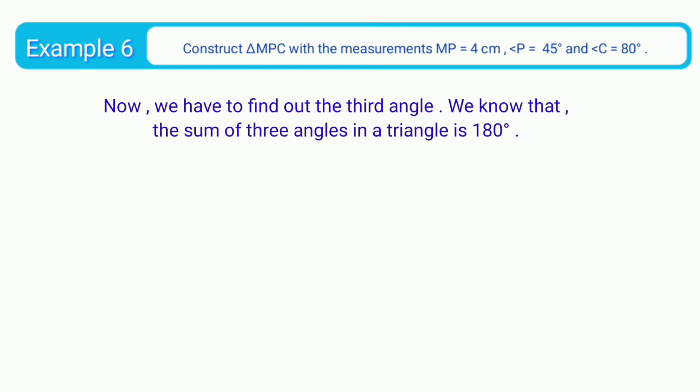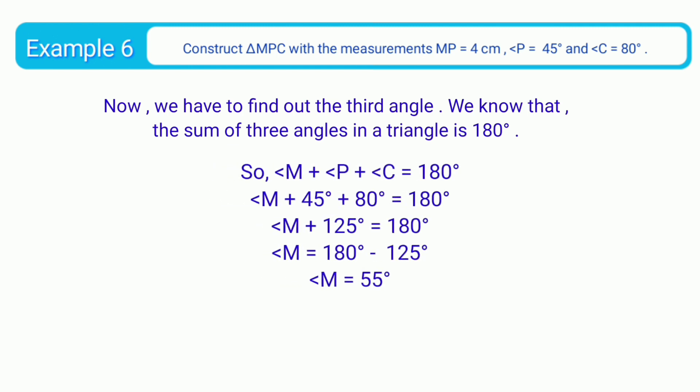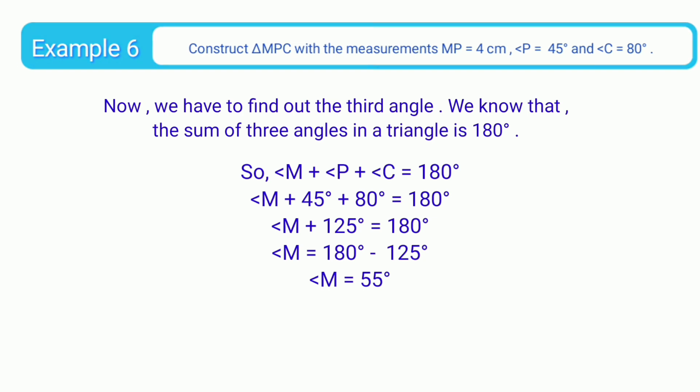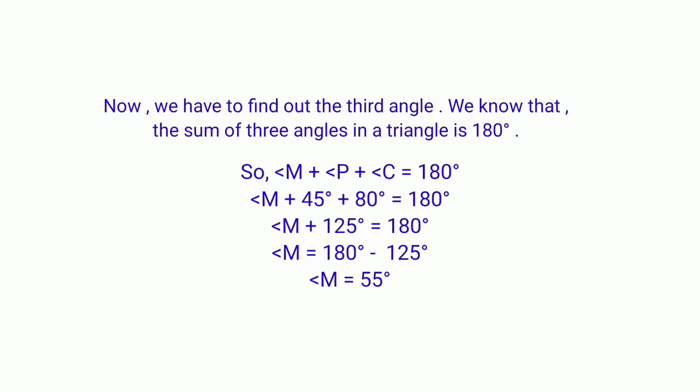We know that the sum of three angles in a triangle is 180 degrees. So angle M plus angle P plus angle C equals 180 degrees. Angle P is 45 degrees and angle C is 80 degrees, so 45 plus 80 equals 125 degrees. Therefore angle M equals 180 minus 125, which is 55 degrees.